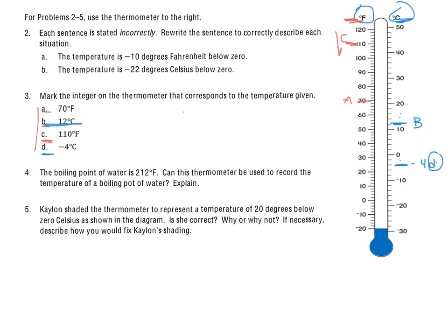And the very last one I want to look at is number 5, the last question. Kaylin shaded the thermometer to represent a temperature of 20 degrees below 0 Celsius, as shown in the diagram. Is she correct? Why or why not? If necessary, describe how you would fix Kaylin's shading. When we take a look at this one, 20 degrees below 0 Celsius, we have to make sure first where she marked it. She did mark it right there at negative 20 degrees, but on which side of the thermometer was she basing it?